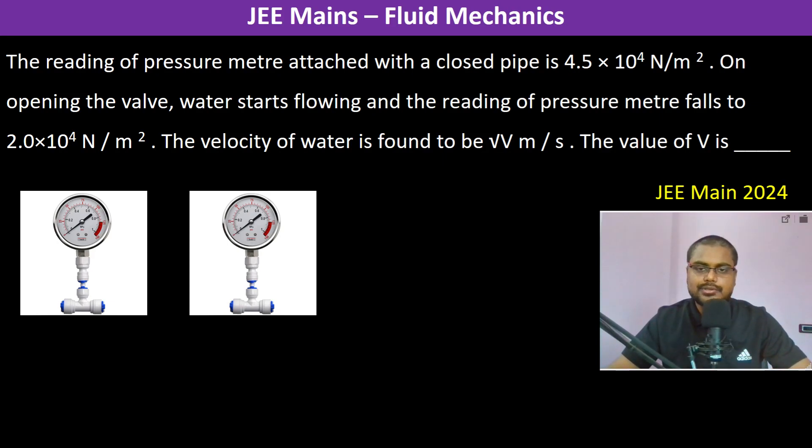The reading of pressure meter attached with a closed pipe is 4.5 into 10 power 4 Newton per meter square. So we have to again apply here the Bernoulli's equation. What is the Bernoulli's equation?